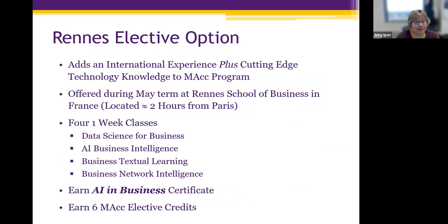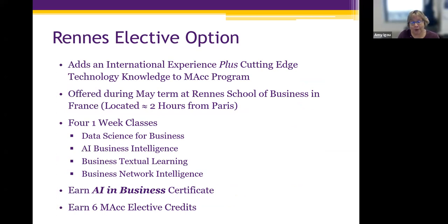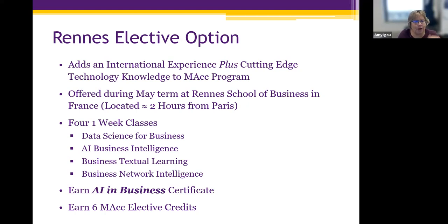One option we offer for six credits — replacing two courses — is a Renn elective option. You get an international experience plus a certificate in artificial intelligence in business within four weeks, and six graduate credits. It's four one-week classes offered in Rennes, which is about two hours northwest of Paris, so you can take the train on weekends and explore the country. Andy participated in this program — Andy, can you tell us briefly about your experience?